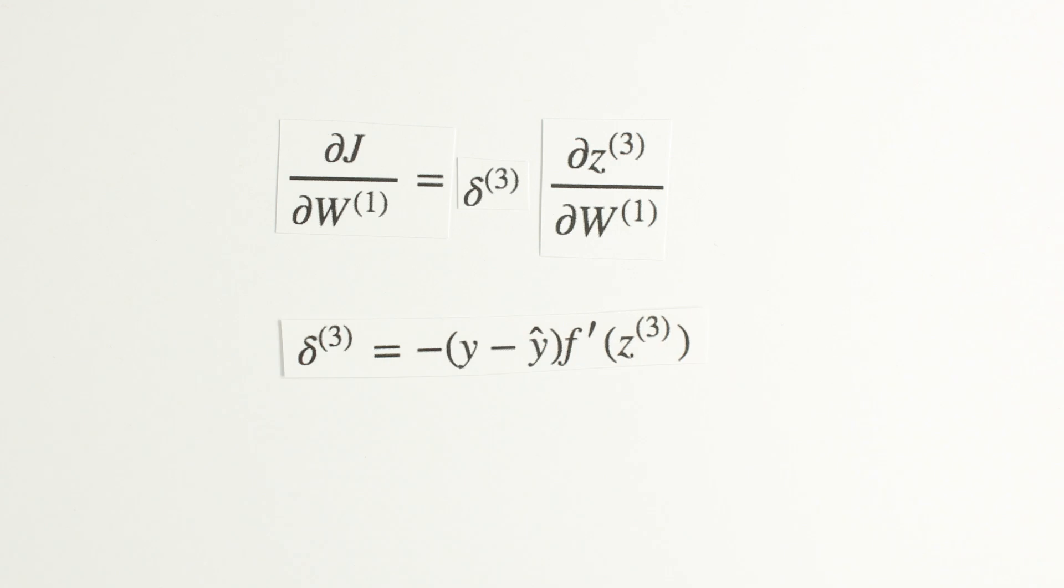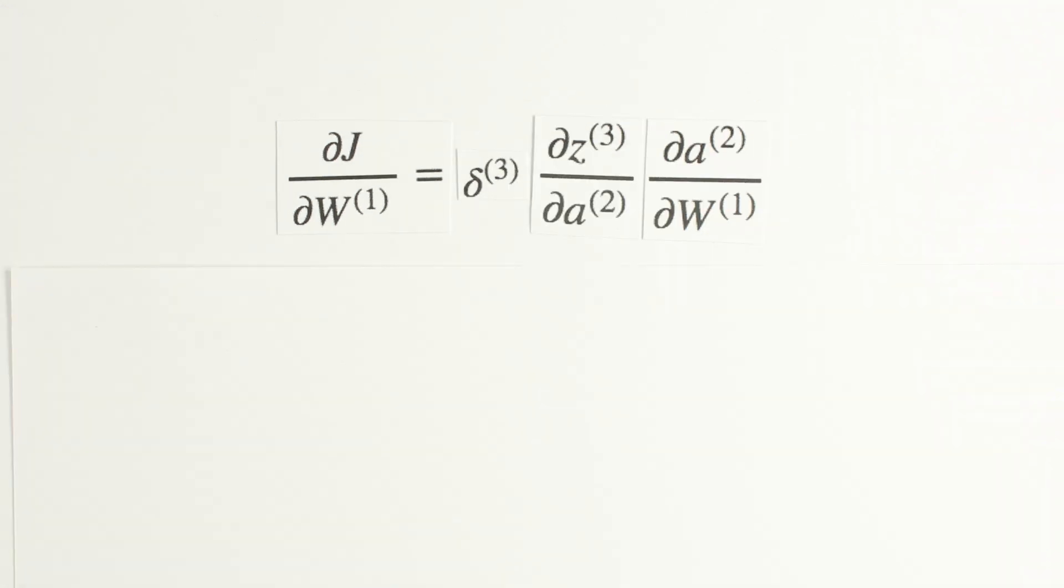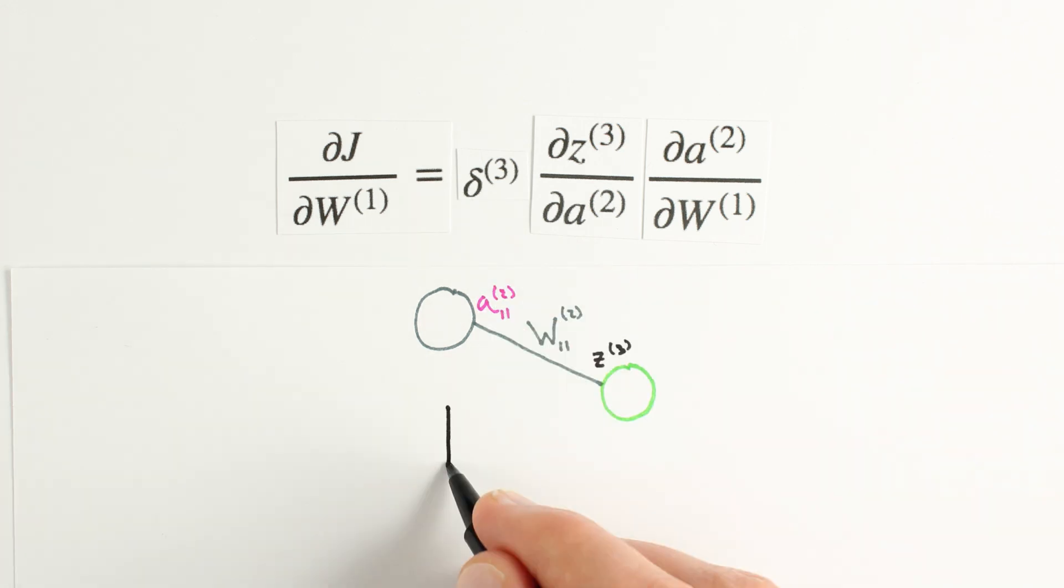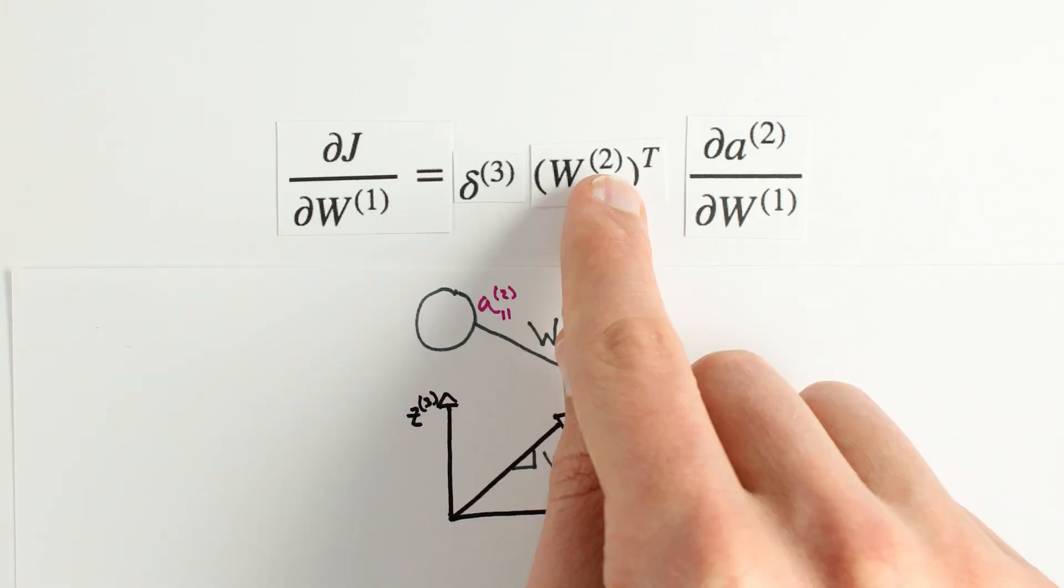We now take the derivative across our synapses, which is a little different from our job last time, which was computing the derivative with respect to the weights on our synapses. There's still a nice linear relationship along each synapse, but now we're interested in the rate of change of z3 with respect to a2. Now the slope is just equal to the weight value for that synapse. We can achieve this mathematically by multiplying by w2 transpose.